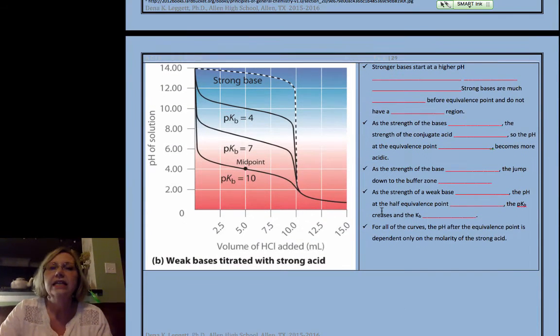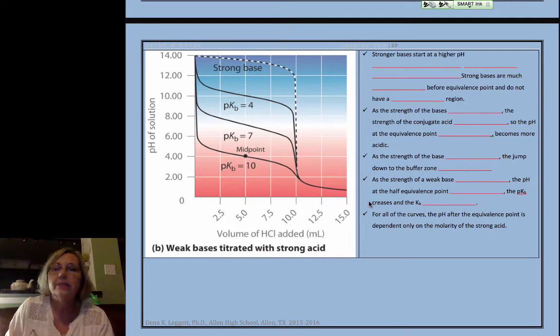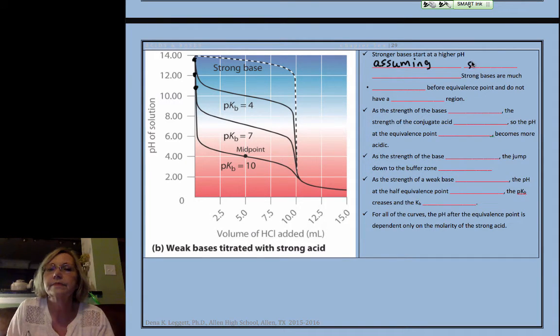Now, I want us to see a comparison with our bases. Very similar. Stronger bases. So, the strongest base, if they were all the same molarity, strong base here, the next one would start here, the next one would start here, and so forth. So, stronger bases start at a higher pH, again, assuming same molarity.